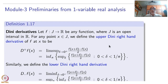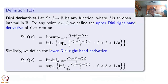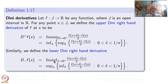Similarly, we can define the lower Dini right-hand derivative: the only change is that instead of lim sup we take lim inf. When you take the infimum over δ in each interval you get a monotonically increasing sequence; taking its supremum gives D- f(x). It can be shown that lim inf is always smaller than or equal to lim sup. Both always exist, and if they are equal the common value is the right-hand derivative.